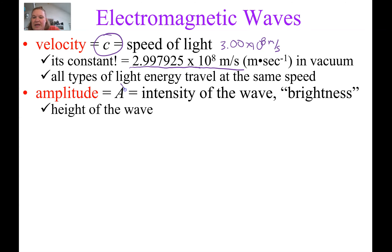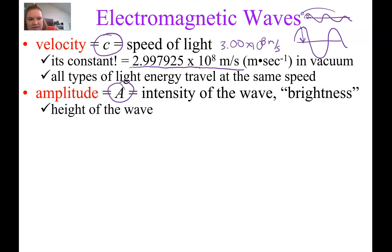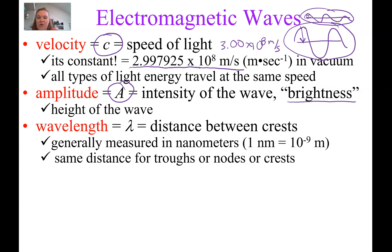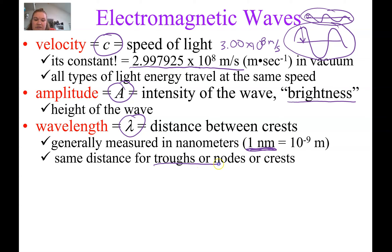The amplitude, abbreviated with a capital A, is the height of the wave. From here to here is the amplitude. So one wave can have a much smaller amplitude compared to another, which means the one with the larger amplitude would be a brighter light. Wavelength is the distance between crests, abbreviated with the Greek letter lambda. For our purposes, because we're talking about atoms and electrons, we're normally dealing with these in nanometers, though wavelengths can also be very large. It's the distance between troughs, nodes, or crests.